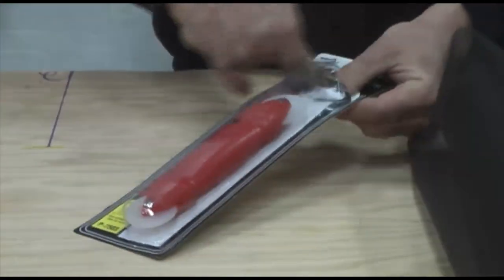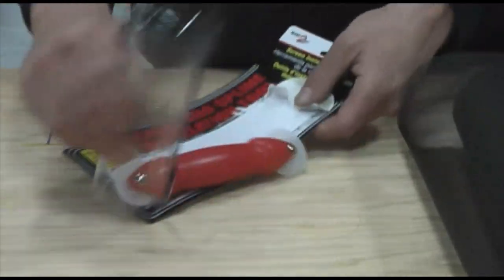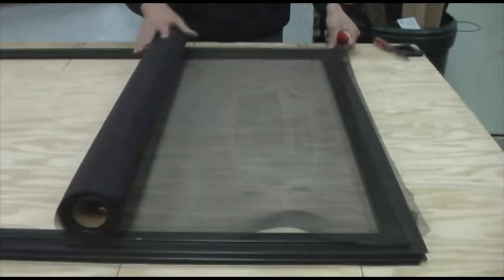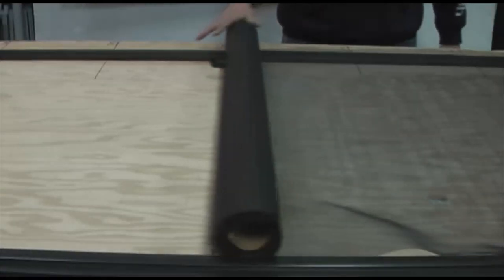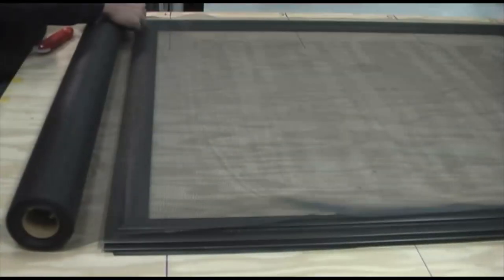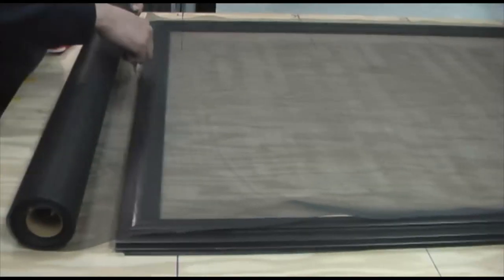You will need to use your roller tool to install your screen material and spline. Take your roll of screen material and roll it over the top of your screen frame. Your roll should be cut to size, but if it is not, trim off the excess.